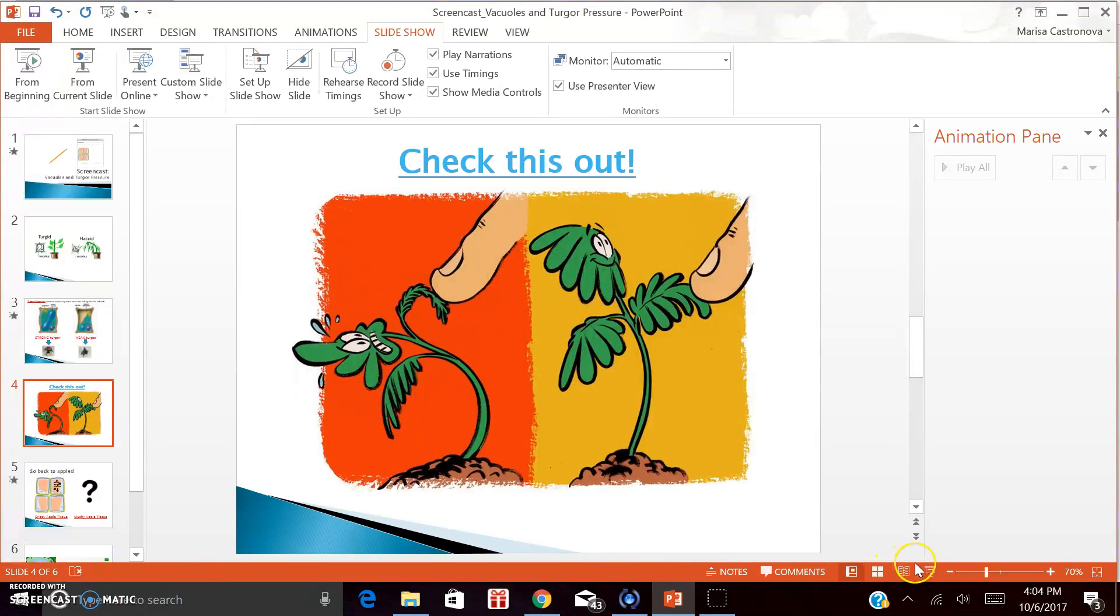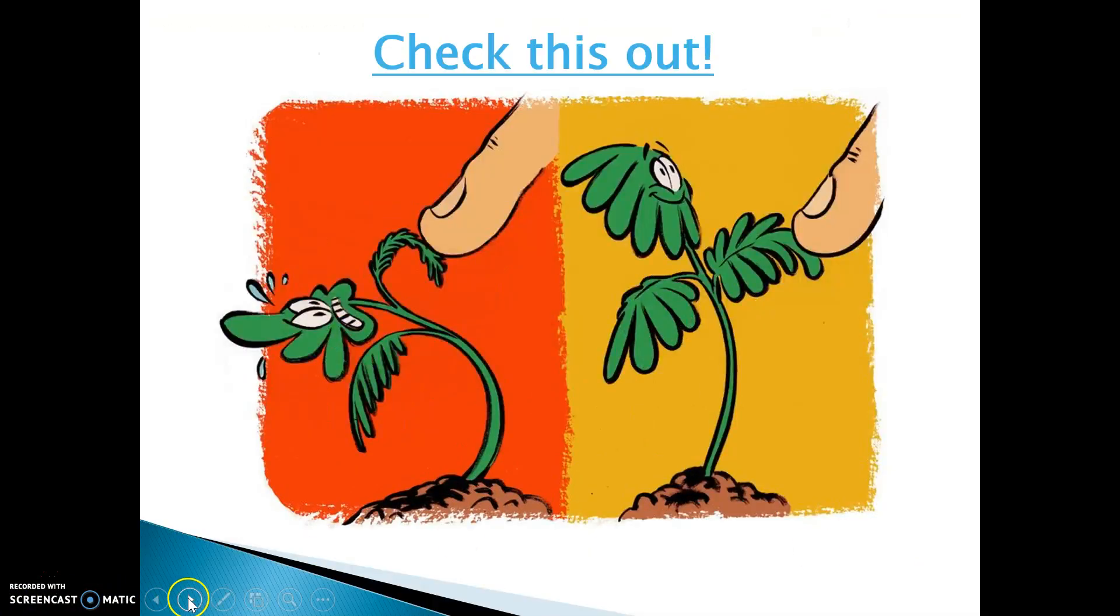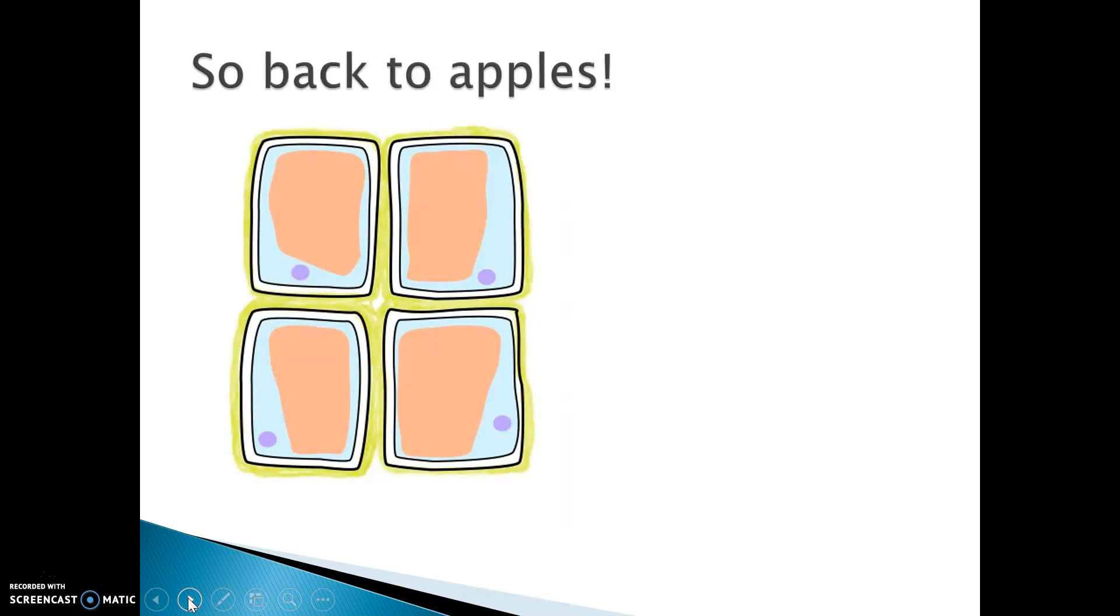That was really cool. Now, let's bring this all back to our apple phenomenon. Look at the picture on this screen. Analyze the size and shape of the vacuoles, along with the shape of the cell walls and cell membranes. Do you think this tissue is mushy or crispy?